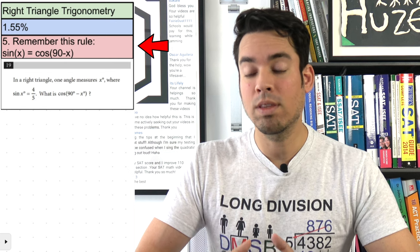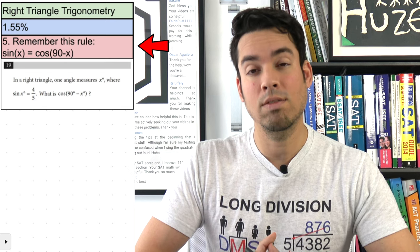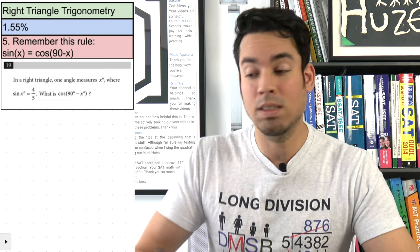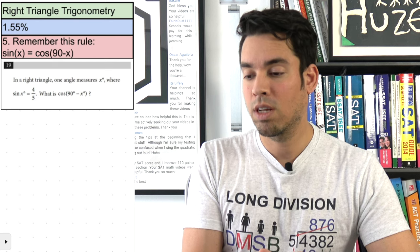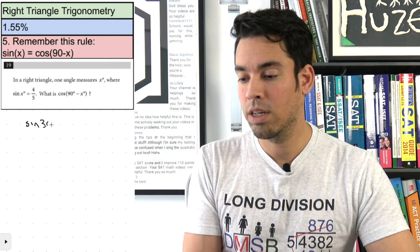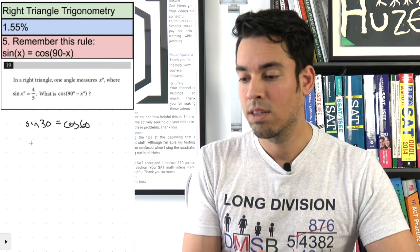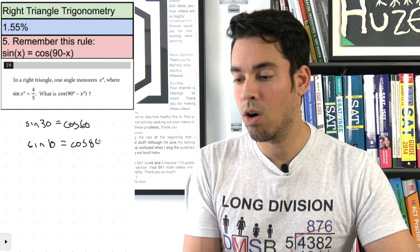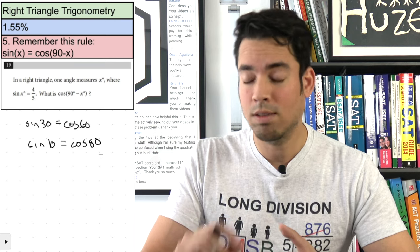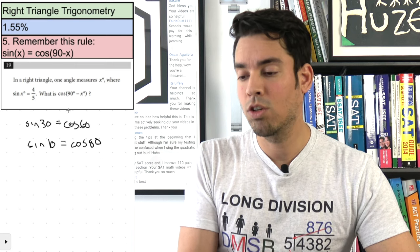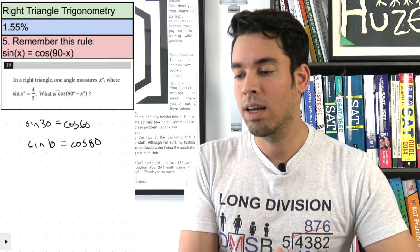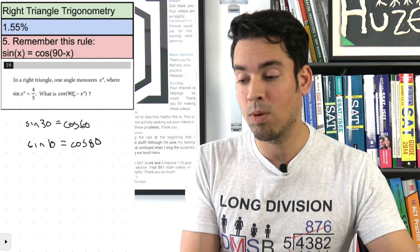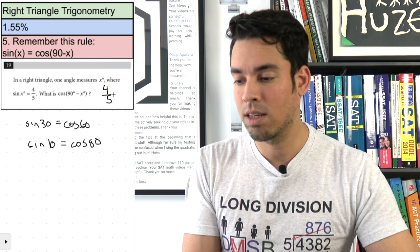Next is right triangle trigonometry, making up 1.55% of the test. The key rule: sine of x equals cosine of (90 − x) — that is, sine of an angle equals cosine of its complement. For example, sine of 30 equals cosine of 60. So in a right triangle where one angle is x degrees, sine of x equals cosine of (90 − x), which equals the same value.